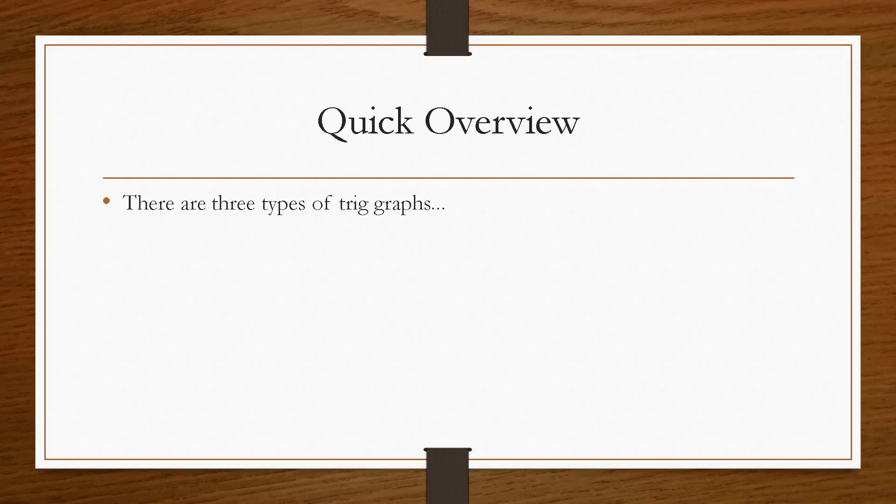So if we take a quick overview, there are three types of trig graphs and they are sine, cos and tan. Now in the National 5 course you will only ever be asked to solve sine and cos graphs. You'll never be asked to draw tan graphs.